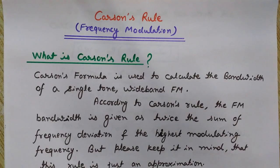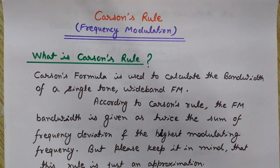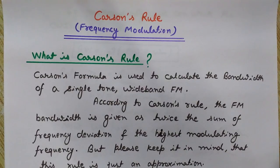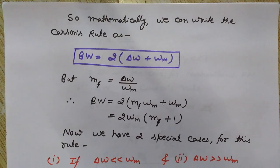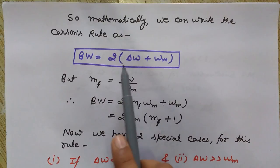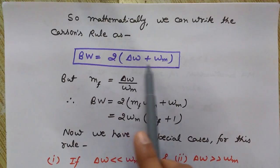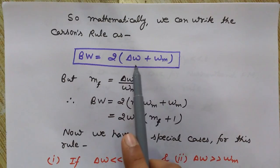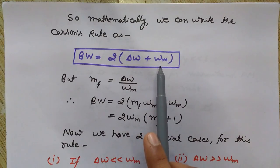It is twice the sum of frequency deviation and the highest modulating frequency. You should keep in mind that this is just an approximation. Mathematically, Carson's rule can be written as: Bandwidth = 2 × (ΔΩ + ΩM), where it is twice the sum of the frequency deviation and the maximum modulating frequency.